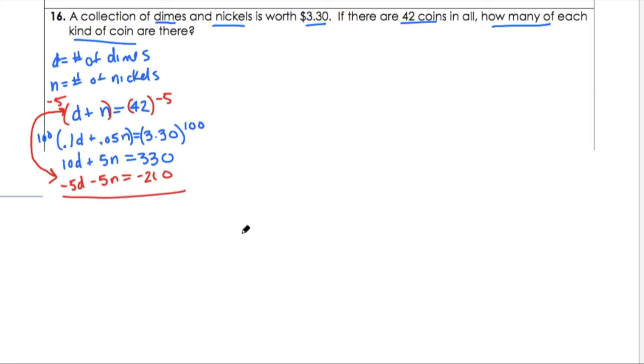So I'll go ahead and add my equations. 10d negative 5d is 5d. The n's canceled as we intended. And on the other side, 330 minus 210 is 120. We can divide both sides by 5 to find that the value of d is 24. So there are 24 dimes.